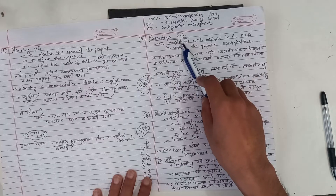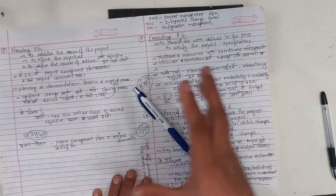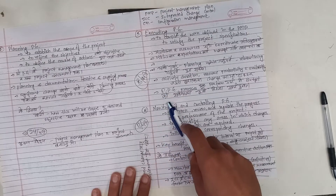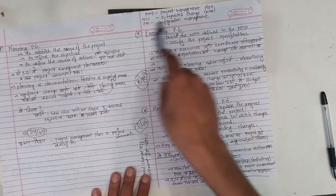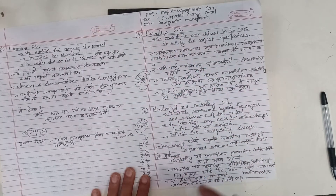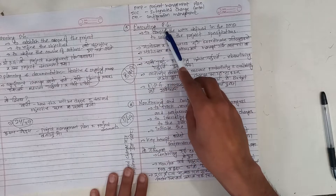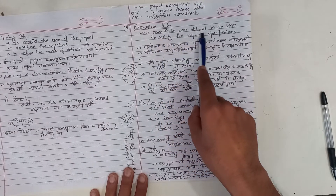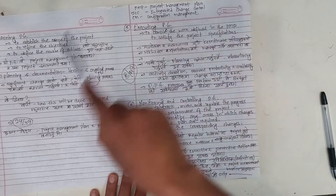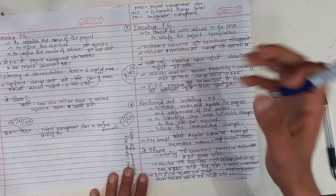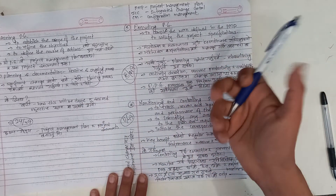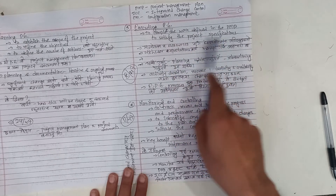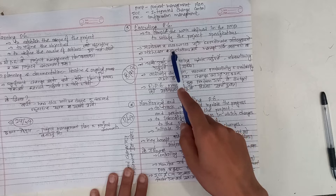Executing process group. The executing process group completes the work defined in the project management plan to satisfy the project requirements. Using all the appropriate HR and resource processes, we perform and complete the work according to the plan.